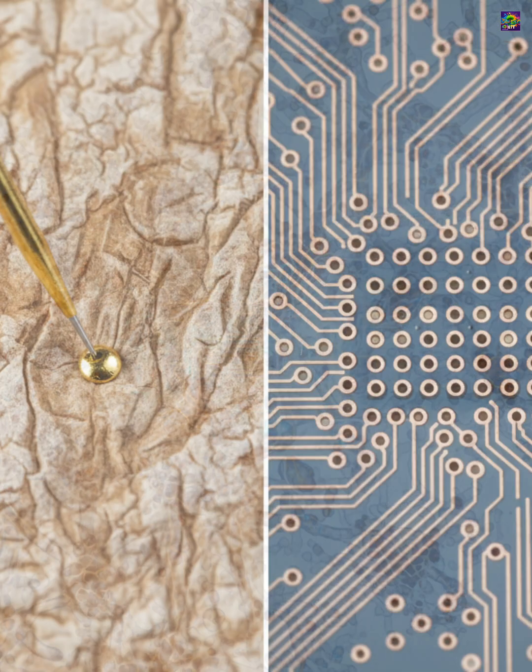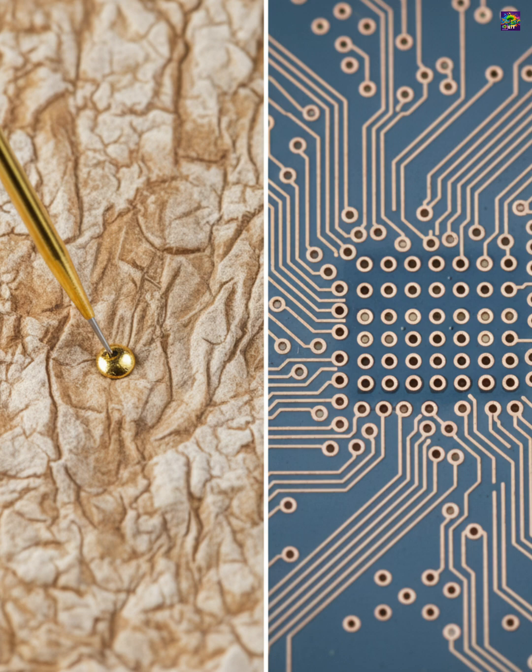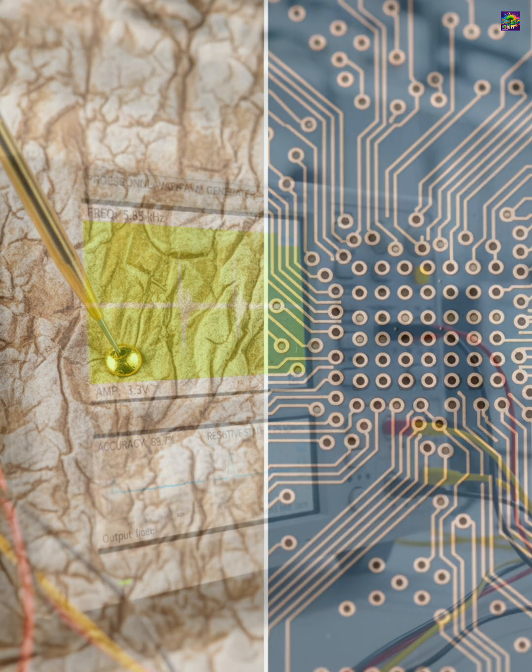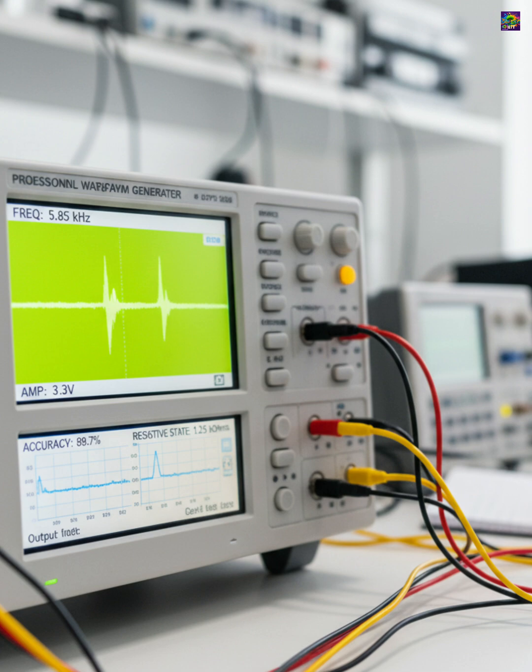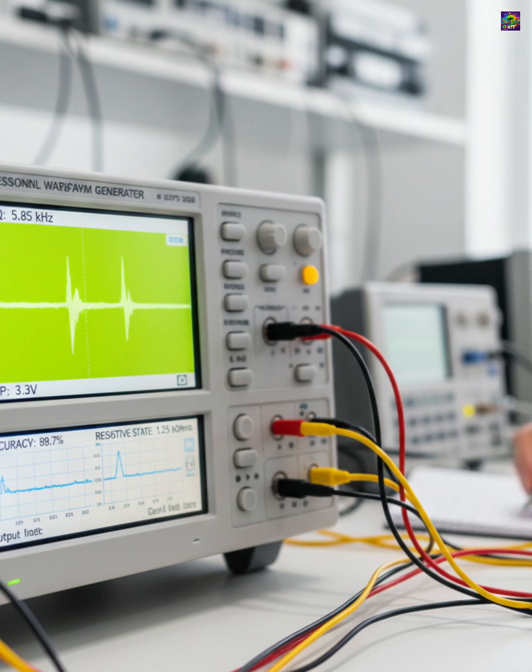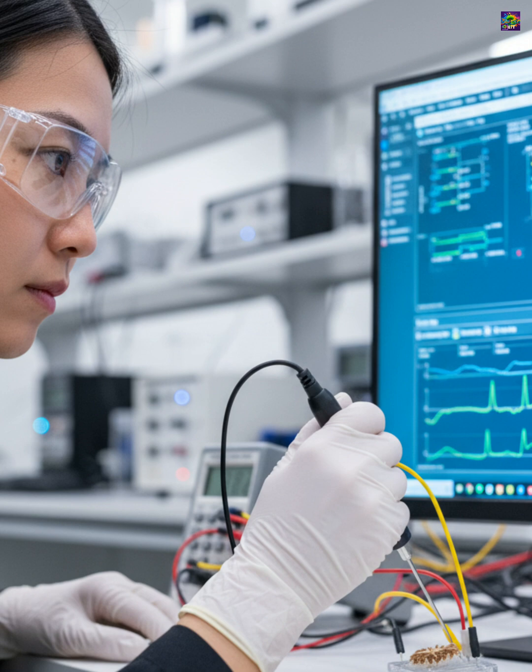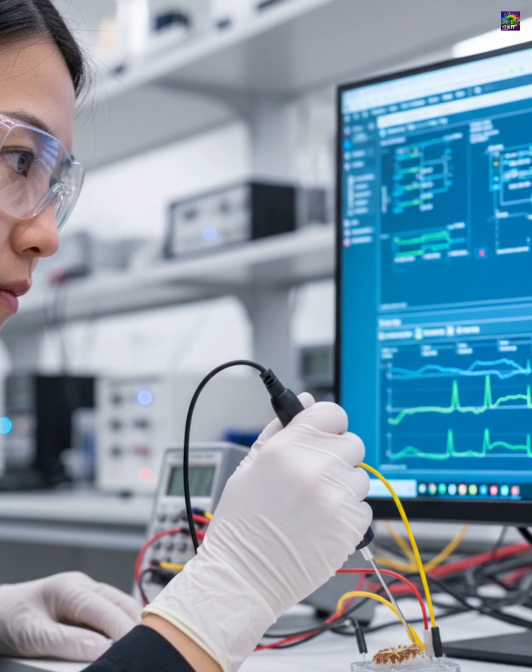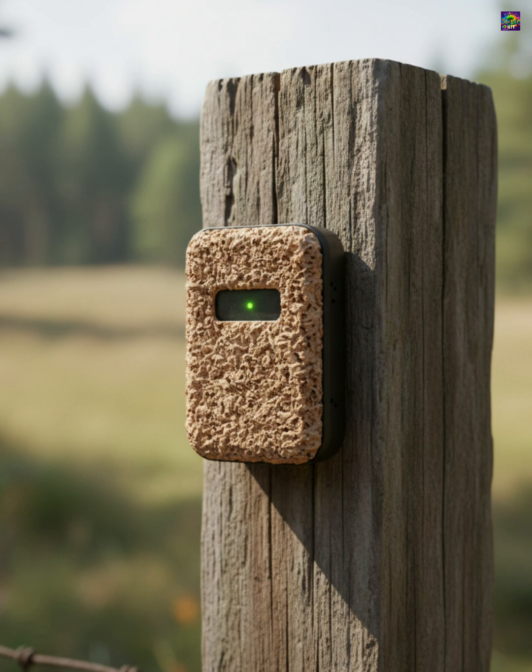In their experiments, researchers grew sheets of mycelium, dehydrated them to form stable networks, and placed electrodes at different points. When electrical pulses were applied, the fungal network reliably switched between resistive states, showing nearly 90% accuracy and functioning at frequencies up to 5,850 Hz, which is impressive for an organic material.